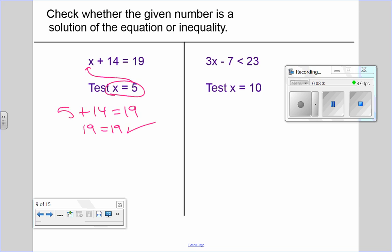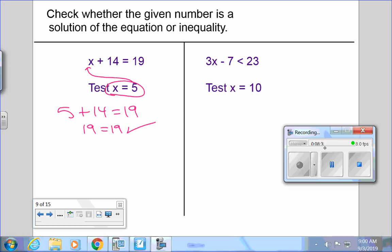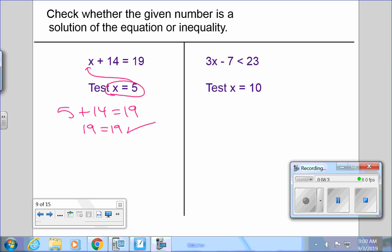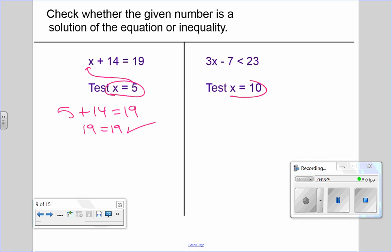This one over here is an inequality. So, what we're going to do is we're going to take this x equals 10. We're going to put the 10 in for x right here, and we're going to see if this statement is true. 3 times 10 is 30. 30 minus 7 is 23. Is 23 less than 23? False. No. 23 is equal to 23, so if it had an equal sign, if it had been less than or equal to, I'd say yes, but it's not less than, so no way.